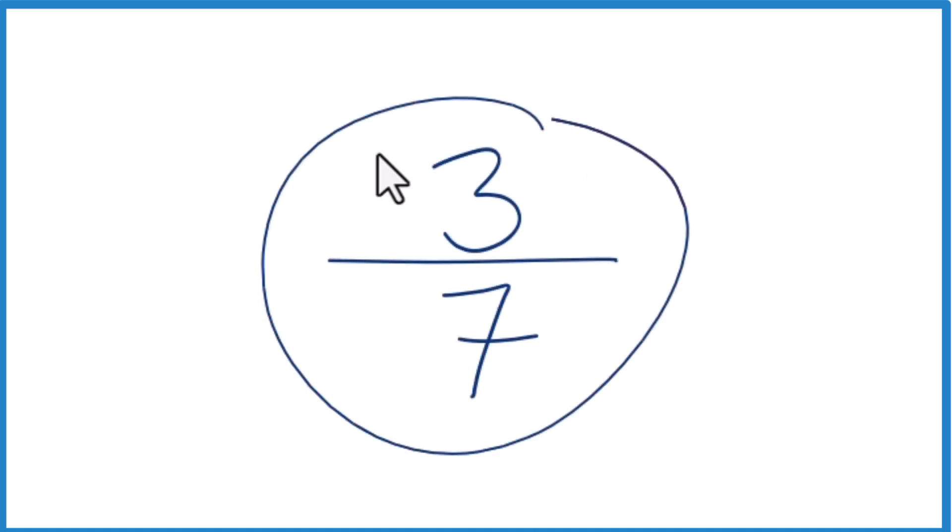Let's write the fraction 3 sevenths as a decimal. And here's how we do that. We know that 3 is smaller than 7. So 3 divided by 7, that's going to be less than 1. It's going to be a decimal.